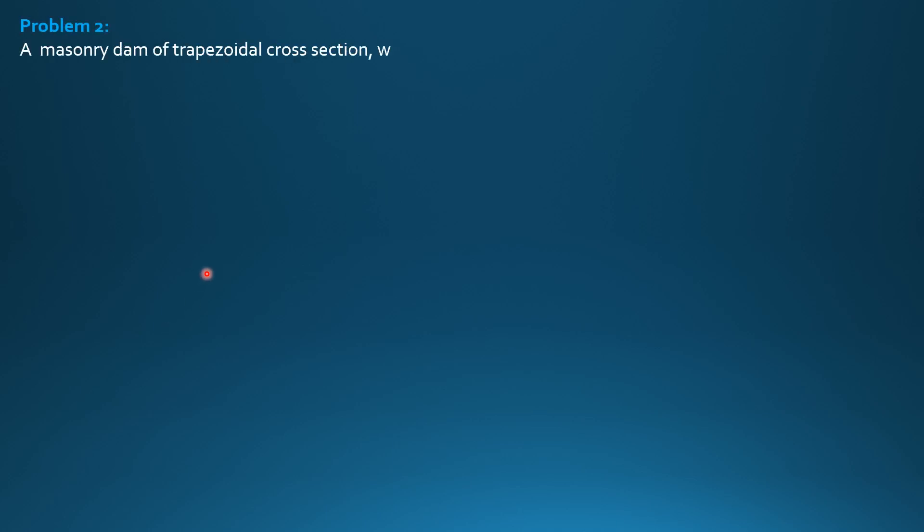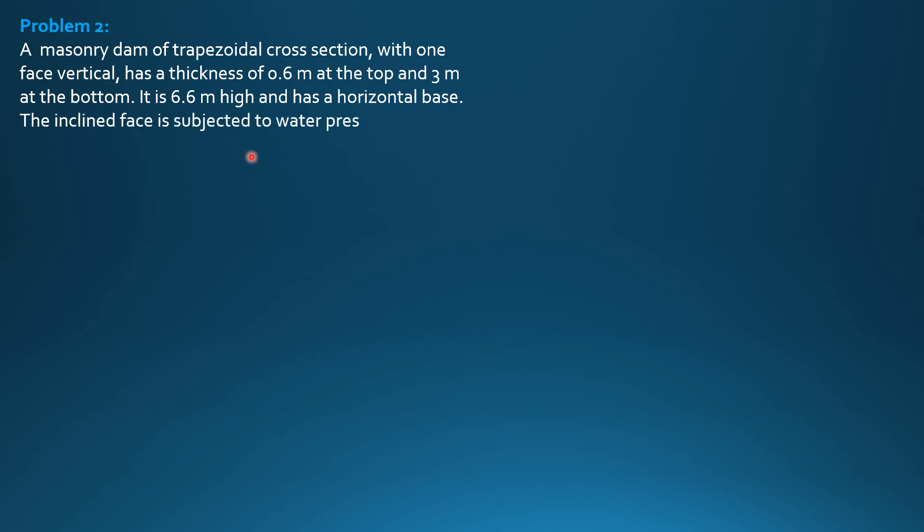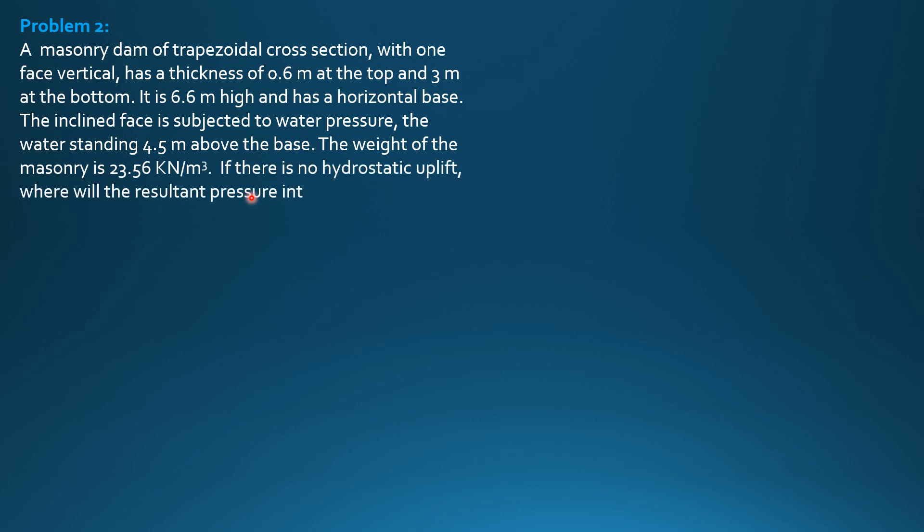A masonry dam of trapezoidal cross-section with one face vertical has a thickness of 0.6 meters at the top and 3 meters at the bottom. It is 6.6 meters high and has a horizontal base. The inclined face is subjected to water pressure, the water standing 4.5 meters above the base. The weight of the masonry is 23.56 kilonewtons per cubic meter. If there is no hydrostatic uplift, where will the resultant pressure intersect the base? Is this a good design?